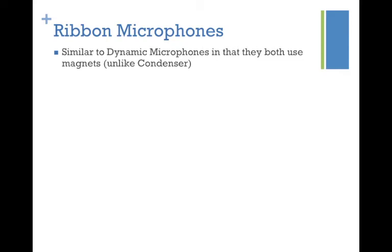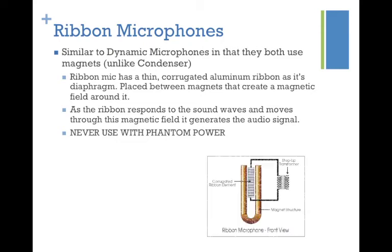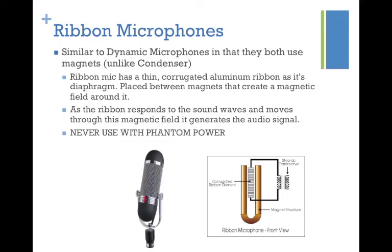Ribbon mics are similar to dynamic microphones in that they both use magnets, unlike condenser microphones. A ribbon mic has a thin corrugated aluminum ribbon as its diaphragm — just like the name suggests. This ribbon is placed between magnets that create a magnetic field around it. The ribbon detects the sound as it passes through, surrounded by the electromagnetic field generated by the circular magnet, and then sound is transmitted from the ribbon through cables out through the microphone.